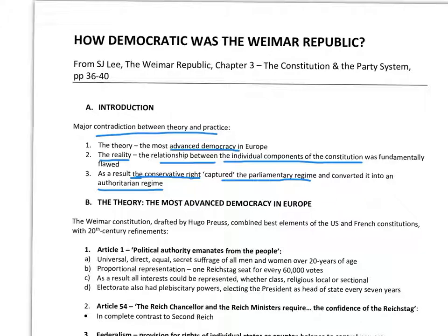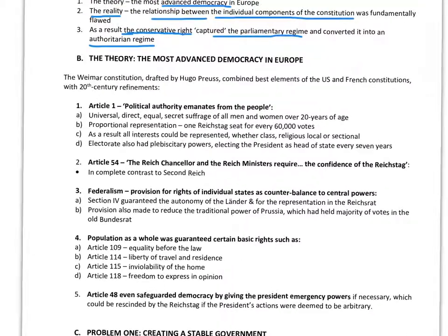So let's move into the first component of Lee's essay: the theory. In theory, the Weimar Constitution was the most advanced democracy in Europe. Drafted by Hugo Preuss, a Jewish liberal lawyer, it combined the best elements of the American and French constitutions with 20th century refinements. It was a very modern constitution, and it deliberately set out to improve the constitution of the Second Reich that Bismarck had created in 1871.